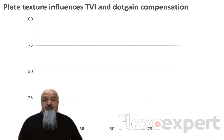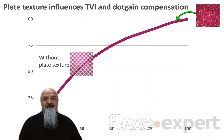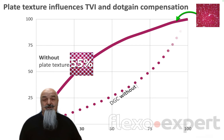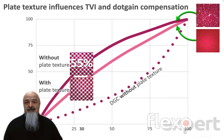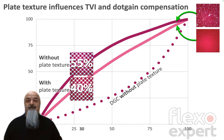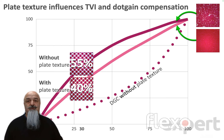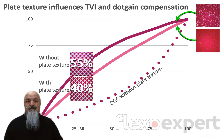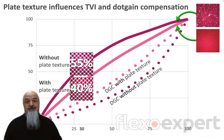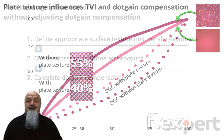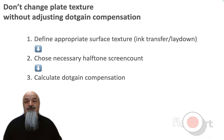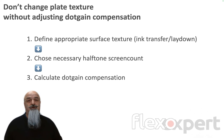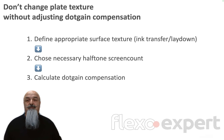The plate without texture required a certain dot gain compensation. Now, if I apply the surface texture while keeping the same press conditions, I have a better ink laydown, a higher density, and a sensibly lower dot gain — so the previous dot gain compensation curve would be too strong. It is no longer suitable for the new plate surface and needs to be recalculated and adjusted. Remember: dot gain compensation depends on halftone screening and on plate surface texture. If you change surface texture on your plate, you have to update your dot gain compensation curves.